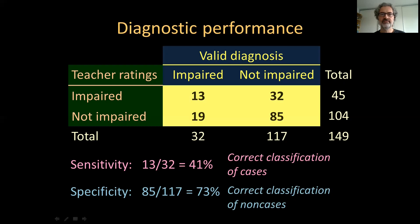In other words, sensitivity concerns the correct classification of cases — here, language impairment — and specificity concerns the correct classification of non-cases, those who are not language impaired. But this is not all the information we need. If we were to start using this instrument as a screening tool instead of the clinical evaluation — our reference variable considered to be true — we wouldn't be seeing those numbers anymore; instead, we would be seeing the report of our new instrument. So we have to evaluate our instrument also on the basis of the marginal row sums, in order to see how dependable the outcomes are.